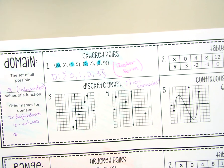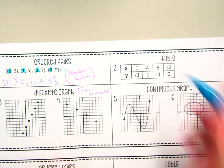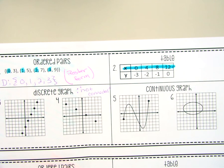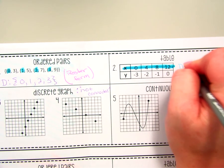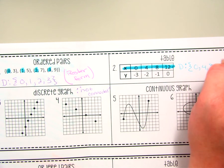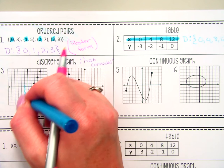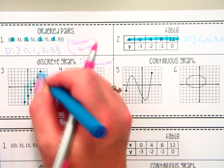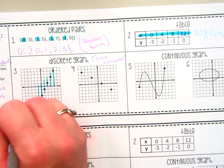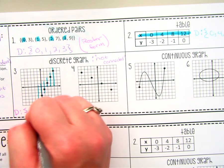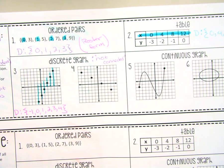Roster form — I always think of a sports team, because a sports team's roster is their list of players. Here, my roster is my list of domain values I'm using. For a table, the domains are the x values listed across the top. We want to go in order from least to greatest, so the domain for that table is 0, 4, 8, and 12. For discrete graphs, you find the x values where your points are and use roster form — so the domain here would be negative 1, 0, 1, 2, 3, and 4.